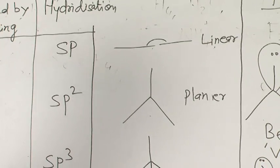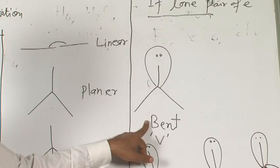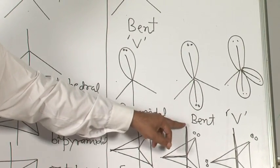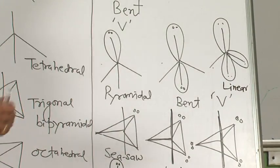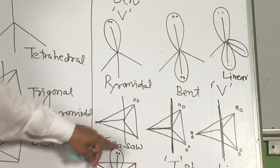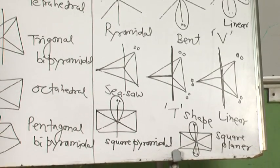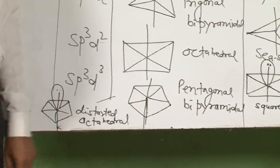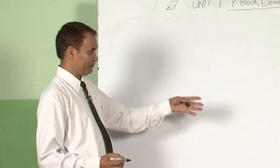If there is any lone pair of electron, the shape will change. In planar triangular with one lone pair, it becomes bent or V-shape. In tetrahedral: one lone pair gives pyramidal, two lone pairs give bent, three lone pairs give linear. In trigonal bipyramidal: one lone pair gives see-saw, two lone pairs give T-shape, three lone pairs give linear. In octahedral: one lone pair gives square pyramidal, two give square planar. In pentagonal bipyramidal: one lone pair gives distorted octahedral. Keep these things in mind when predicting hybridization and geometry.